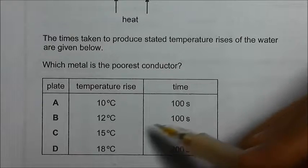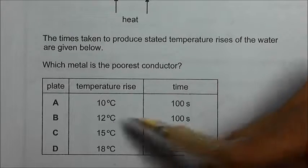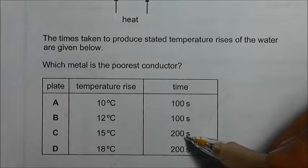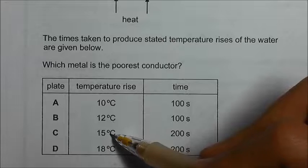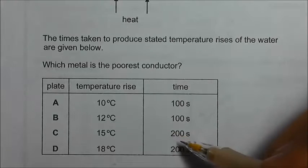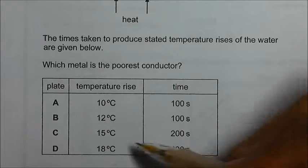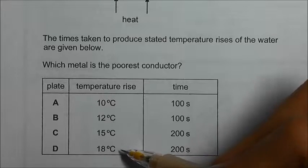Plate B, it takes 200 seconds to rise 12 degrees Celsius. Plate C, it takes 200 seconds to rise 15 degrees Celsius. And plate D, it takes 200 seconds to rise 18 degrees Celsius.